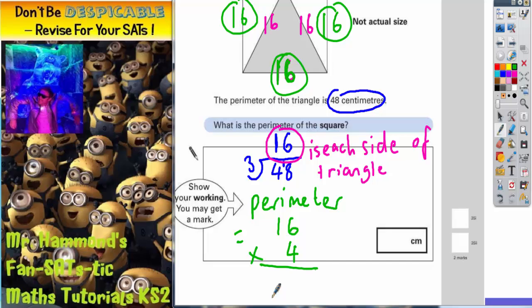4 times 6 is 24, put your 4 in, carry 2. 4 ones are 4, plus that 2 is 6. So the perimeter of the square must be 64 centimeters, and that's the answer that needs to go in there.